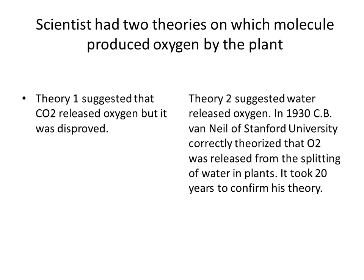Scientists had two theories on which molecule produced oxygen in the plant. Theory one suggested that carbon dioxide released oxygen, but that was disproven. Theory two suggested that water was going to be split to release oxygen, and that was accepted. In 1930, C.B. Van Neel of Stanford University correctly theorized that oxygen was released when water was split, not carbon dioxide.